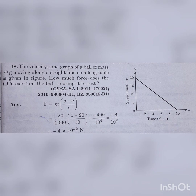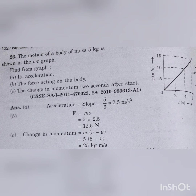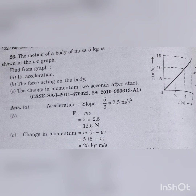Next graphical question: the motion of a body of mass 5 kg is shown in a VT graph. From the graph, the x-axis shows time values 2, 4, 6 seconds, and the y-axis shows velocities 5, 10, 15 m/s. After 2 s velocity is 5, after 4 s it is 10, after 6 s it is 15. Acceleration = slope = (velocity / time) = 5 / 2 = 2.5 m/s².